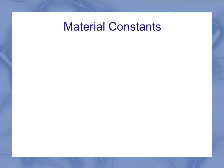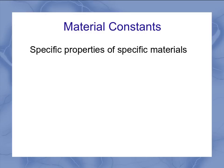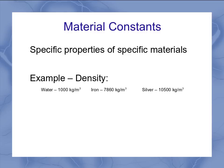Then you get into material constants. Material constants are specific properties of specific materials. Another example, we could look at density. Each material has a different density, but water always has a typical density of about 1,000 kilograms per meter cubed. And iron and silver each have their own specific ones.